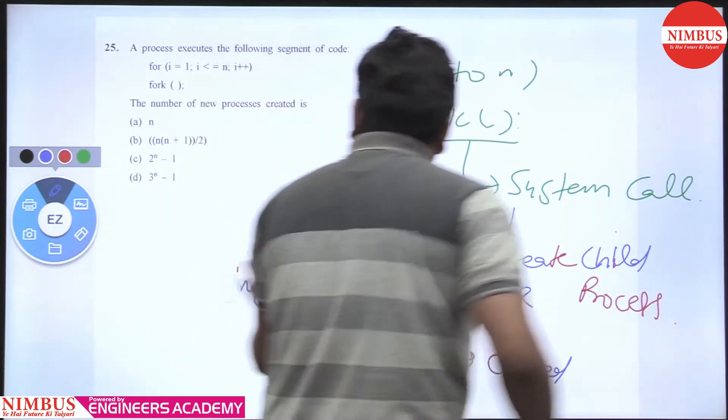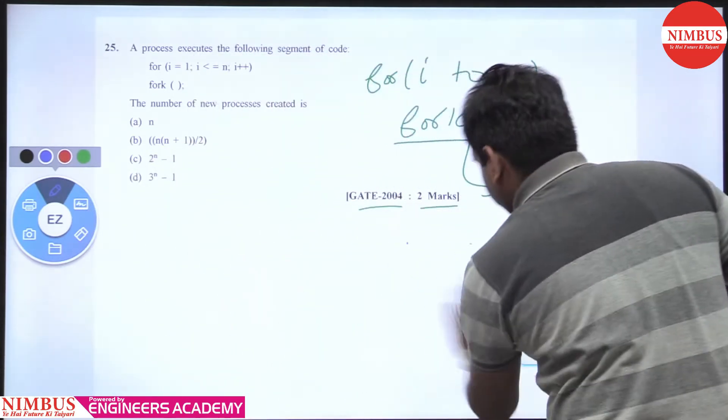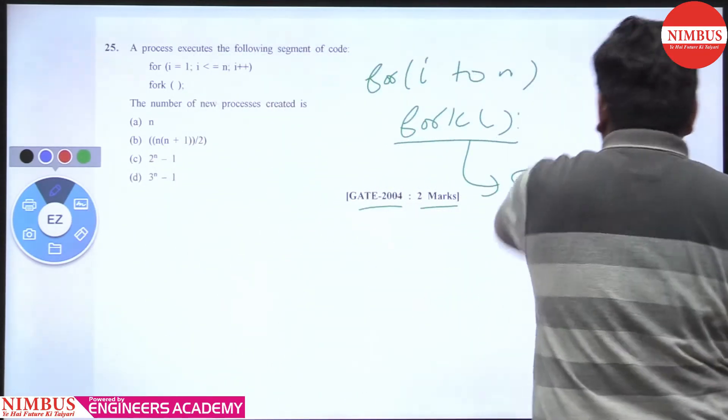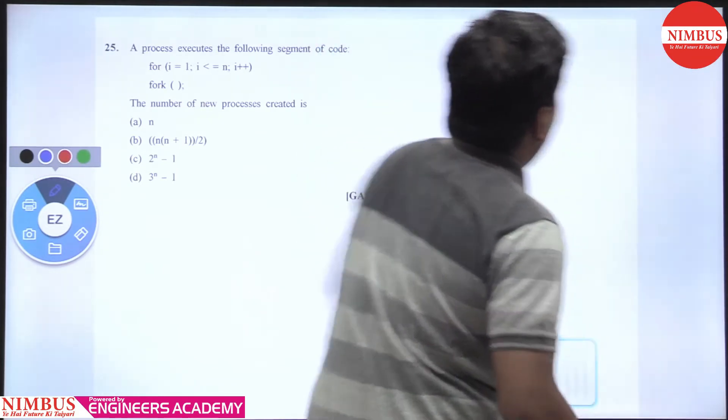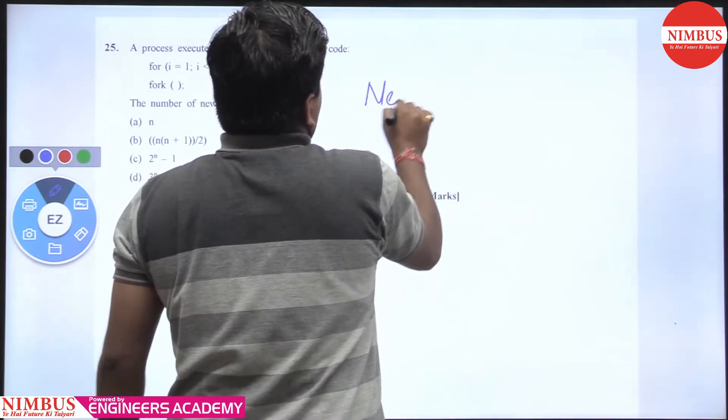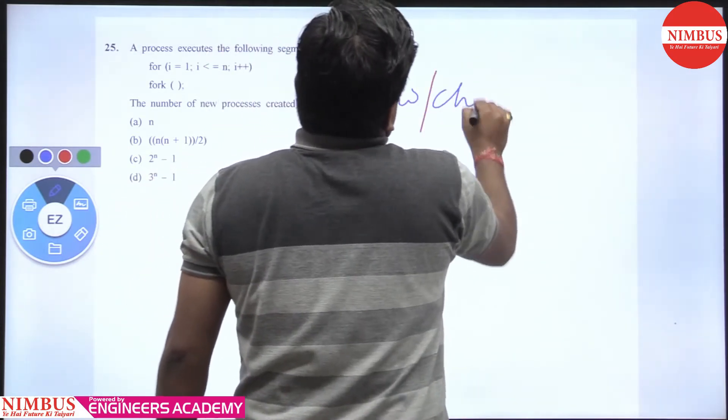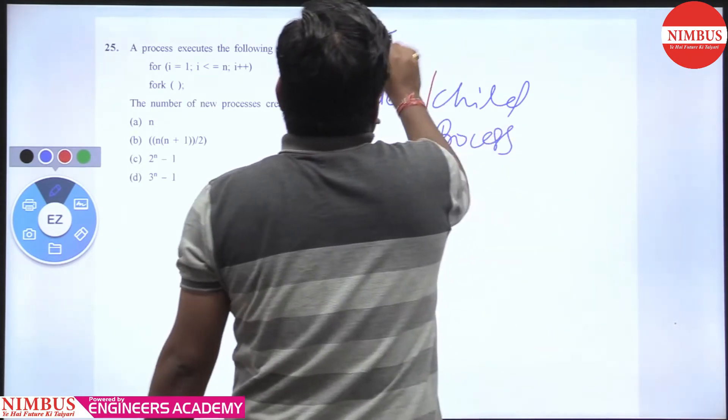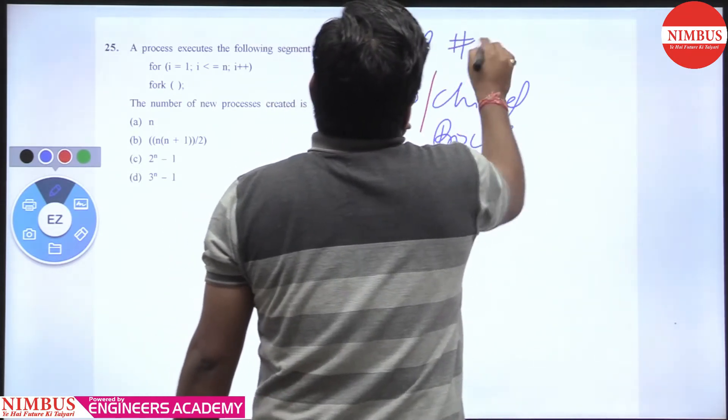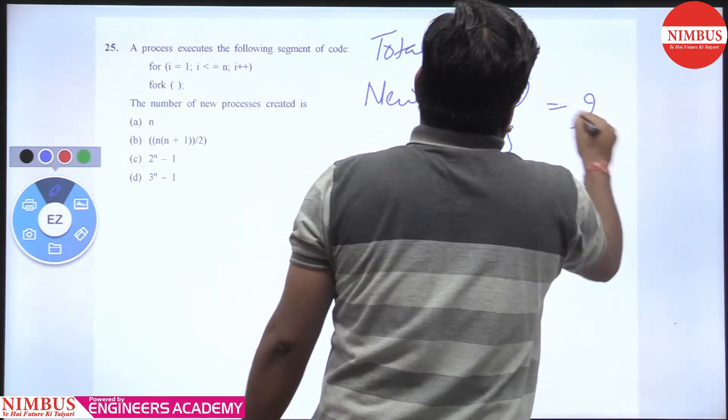So what is the total number of processes created? In fork, the total number of child processes created equals 2 raised to power n minus 1, where n is the number of times fork is called.